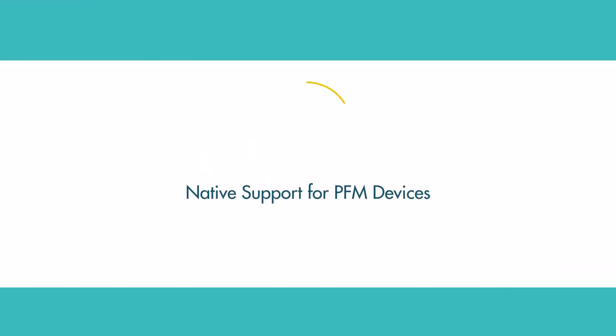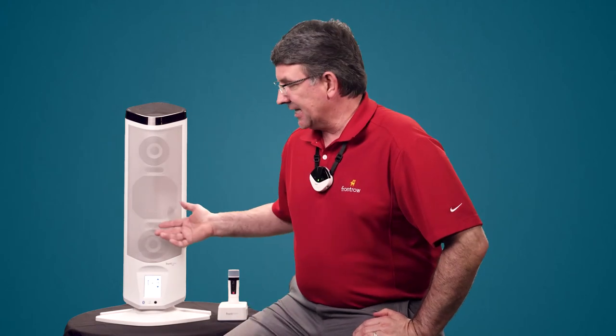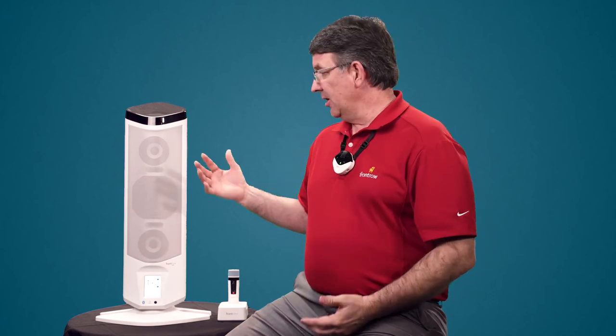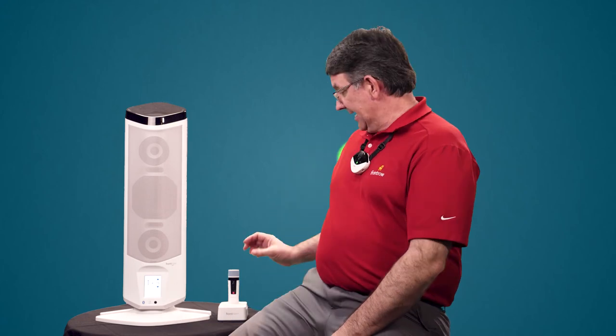Since Front Row got its start with special needs students, all products come with native support for PFM devices. If any students have cochlear implants or hearing aids, it's simple to connect those receivers into the side of the Juno's audio out. You may need a second splitter if one is already in use for Zoom. That way the teacher only needs to wear one mic — her voice comes through the Juno and is sent directly to the student's hearing aid. The student can also hear all media, audio, and music perfectly, and with student mics they can hear other students better than ever.